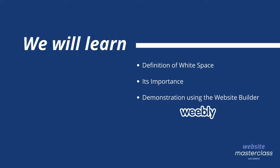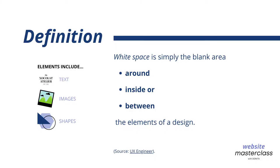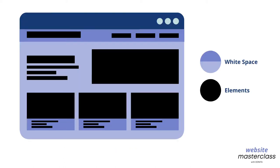I'll be using a website builder called Weebly — you can try this on your own website platform, it's very simple. So white space is simply the blank area around, inside, or between the elements of a design. Just to clarify, white space doesn't refer to just white areas in a website — the area can be in any color, pattern, or texture. In this diagram, the white space is the area shown in purple: it is the area around elements such as text, images, or shapes.